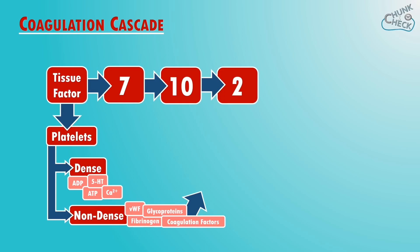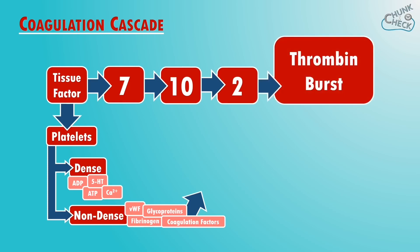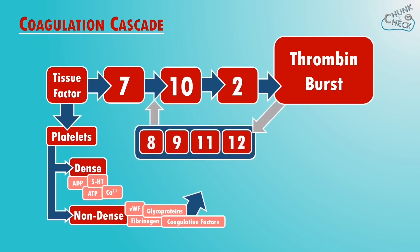You might have heard factor 2 being called thrombin, so activated factor 10 converts prothrombin to thrombin. After a small amount of thrombin is produced, other factors are activated which feed back into the pathway to produce more thrombin, and this is known as a thrombin burst.